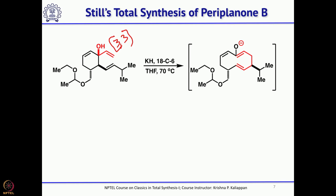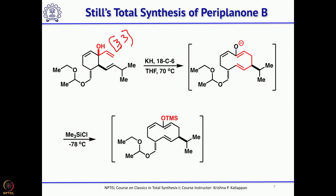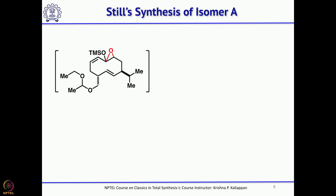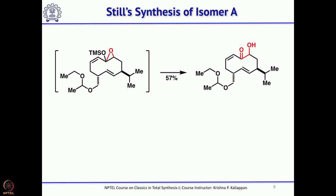This was treated with potassium hydride in the presence of 18-crown-6, and it underwent anionic oxy-Cope rearrangement. Quenching with TMS chloride gives the corresponding enol TMS ether. Then adding MCPBA undergoes Rubottom oxidation to introduce a hydroxyl group next to the carbonyl. That is how he could introduce the hydroxyl group alpha to the carbonyl.